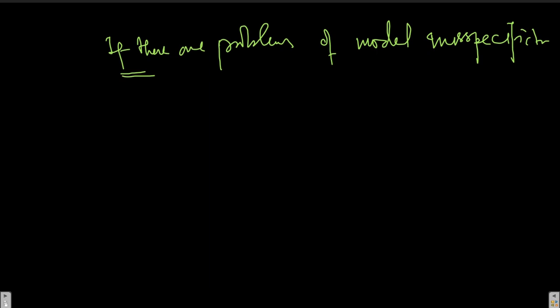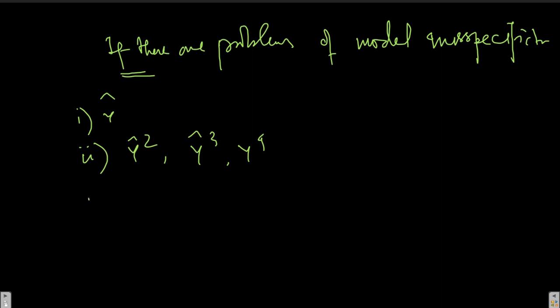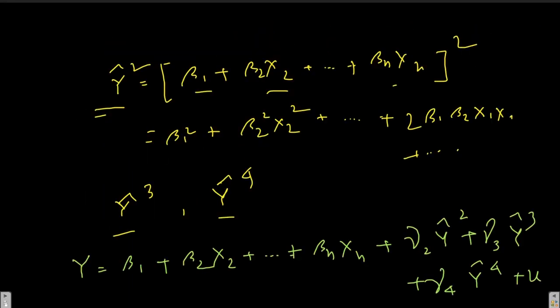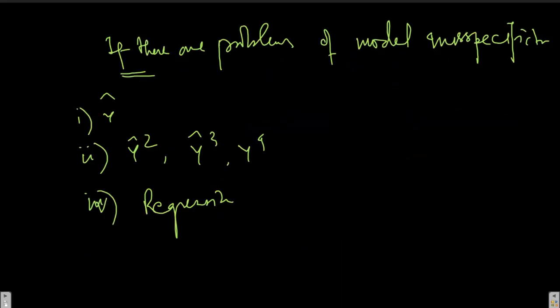The steps are: first, get ŷ (the estimated y); then compute ŷ², ŷ³, and ŷ⁴; then run the final regression using what I call equation star — the original equation augmented with these higher-order ŷ terms.